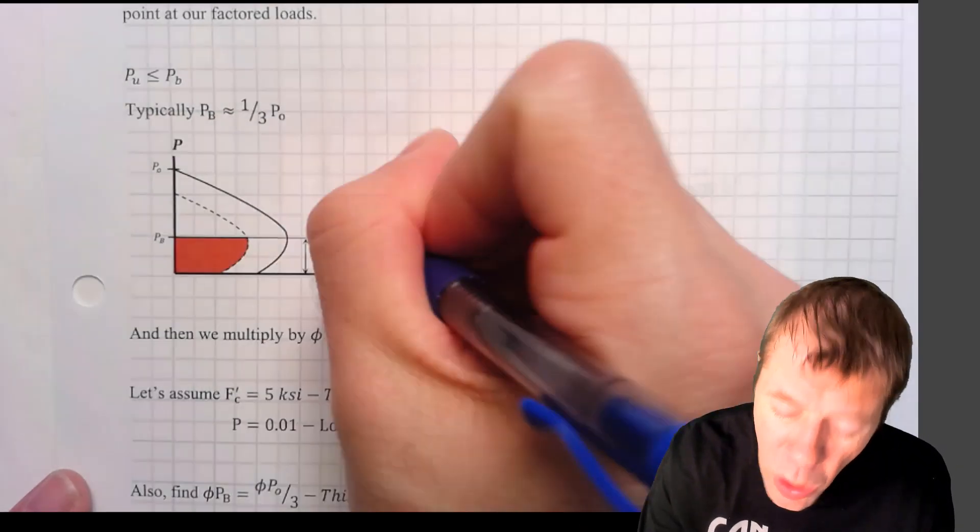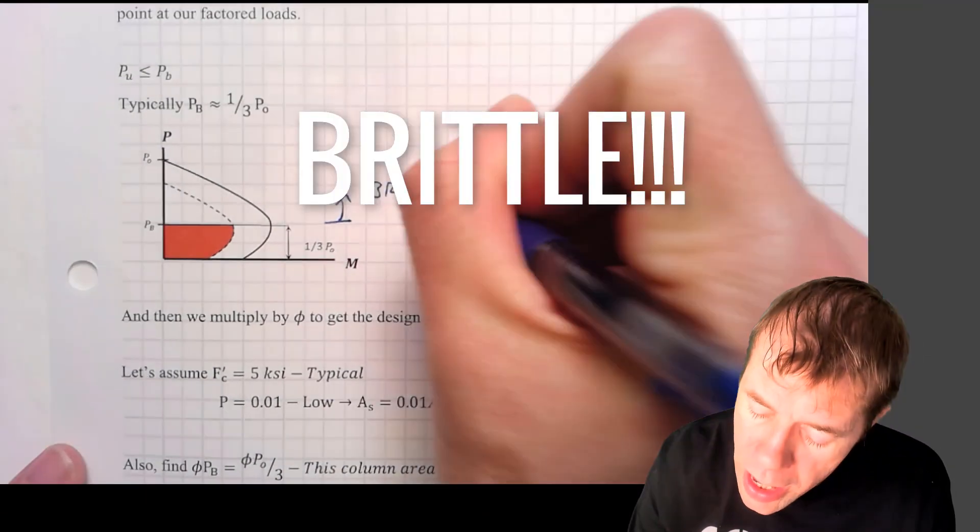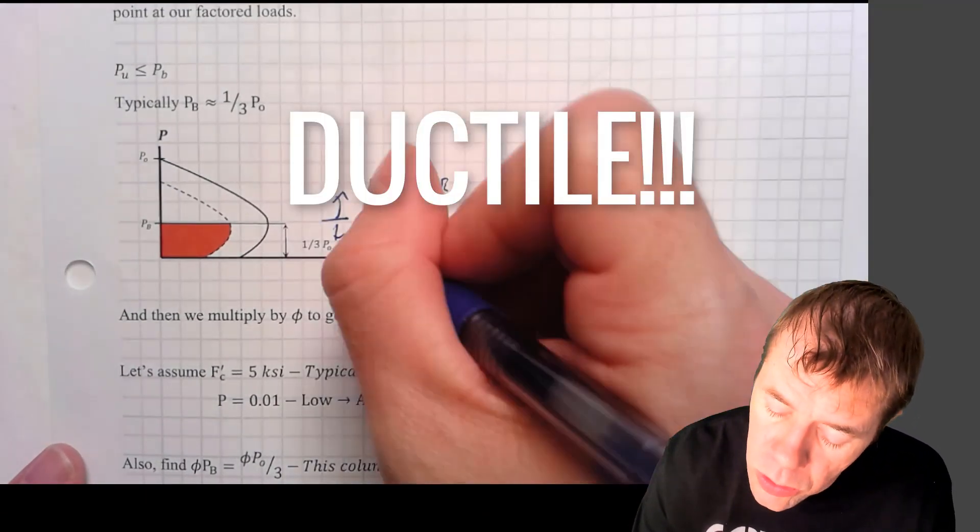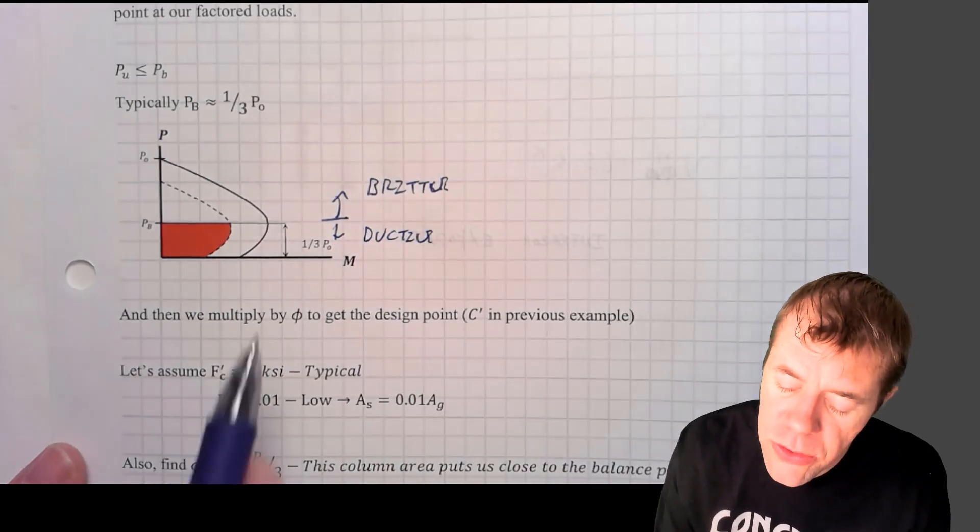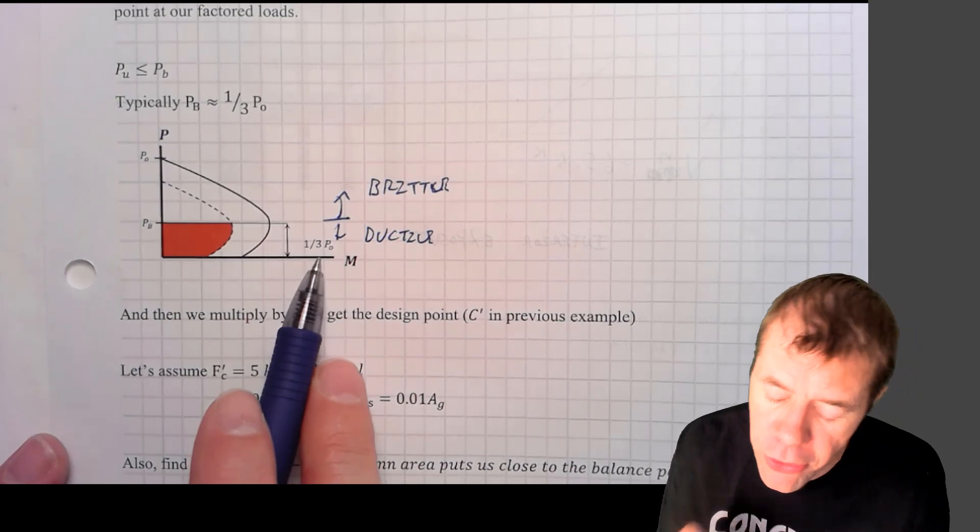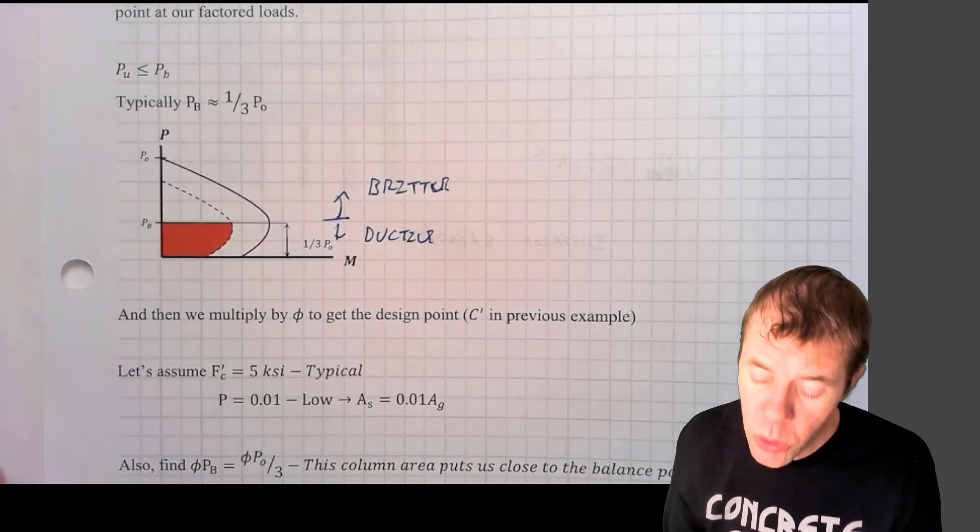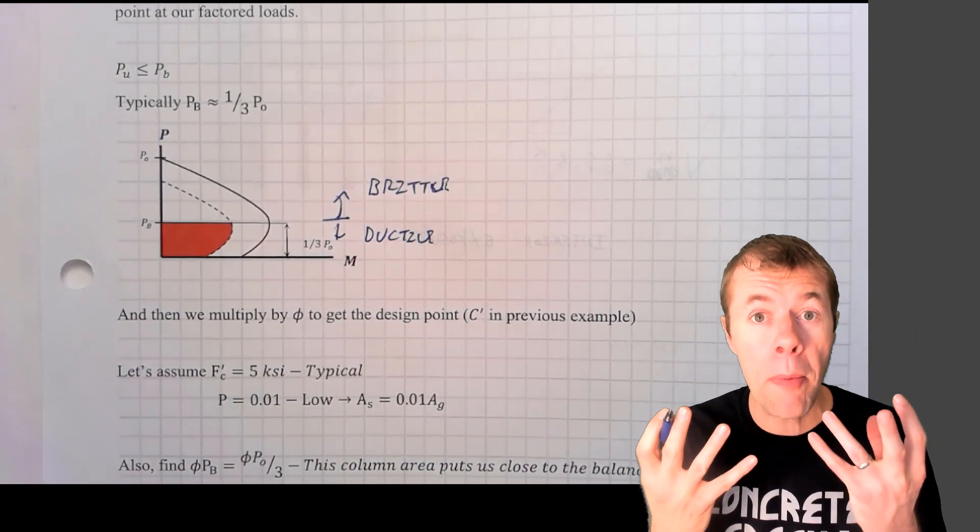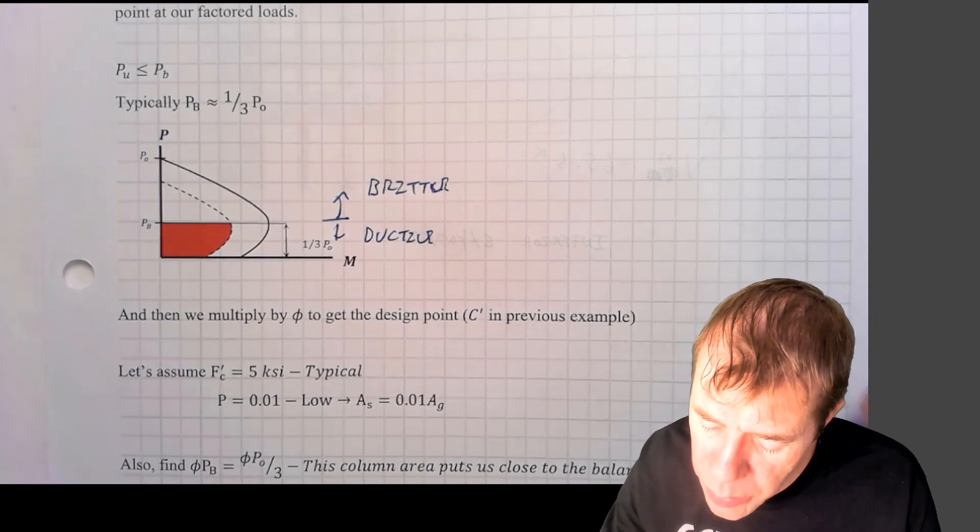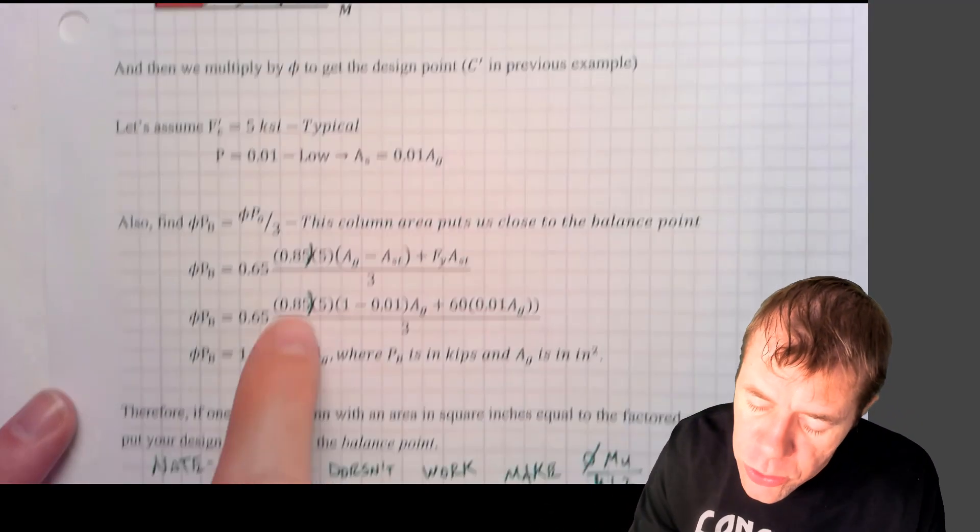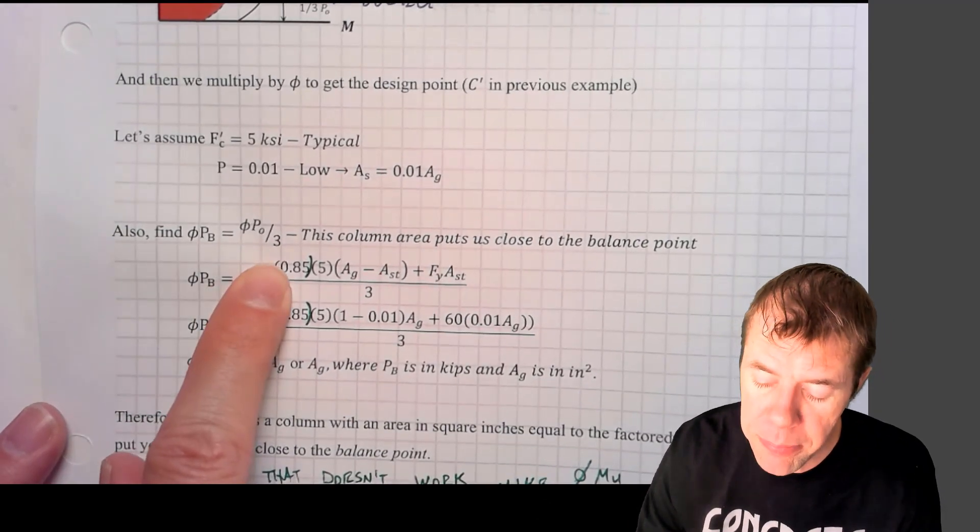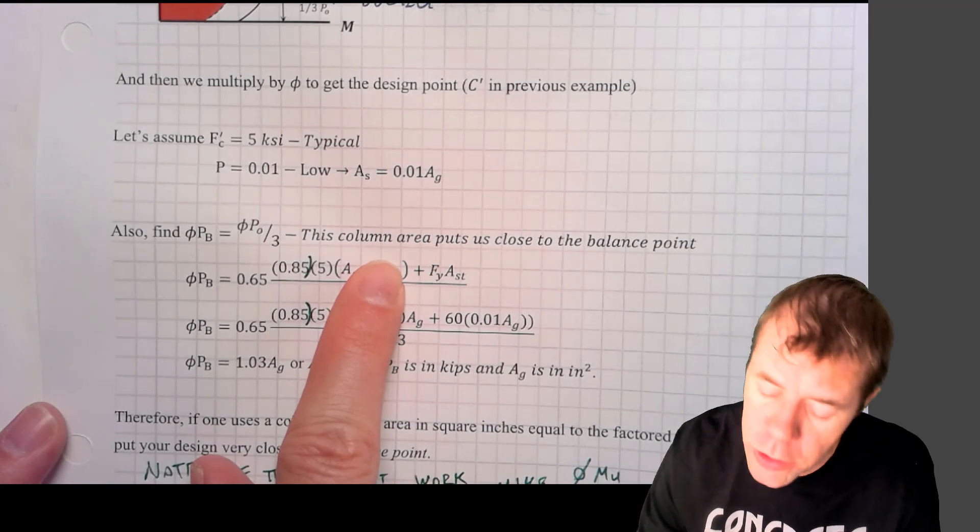This nose point right here, this kind of crossover between ductile and brittle, everything above here is brittle, and everything below here is ductile. And what this shows you is that this kind of break over point is right about one third PO. So we're going to shoot to put our column about there or maybe a little bit lower. So what we're going to do is we're going to find this PO value, divide it by three. This is going to give us a good estimate of the balance point.